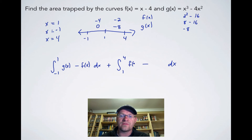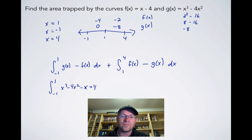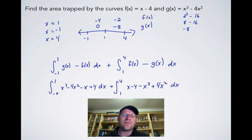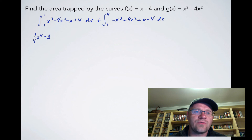Substituting the functions: the first integral from negative one to one is (x cubed minus 4x squared) minus (x minus 4) dx, which simplifies by distributing the negative to negative x plus 4. The second integral from one to four is (x minus 4) minus (x cubed minus 4x squared) dx, which gives negative x cubed plus 4x squared plus x minus 4 dx.